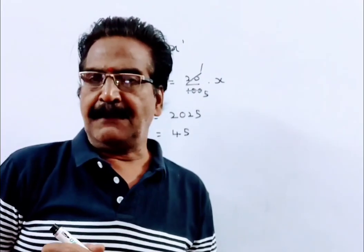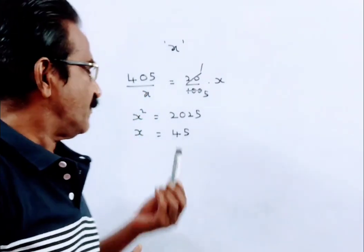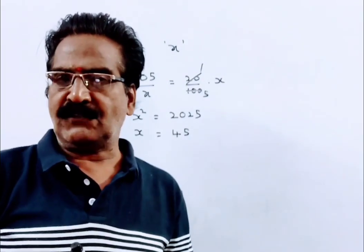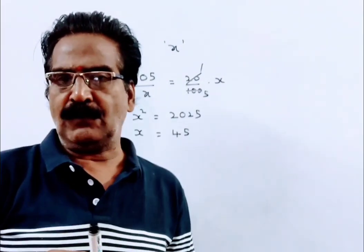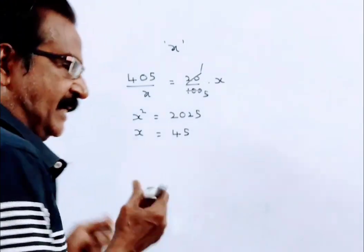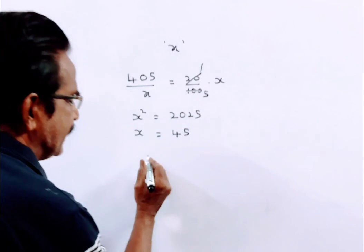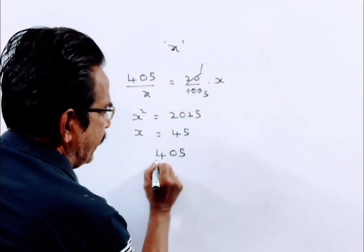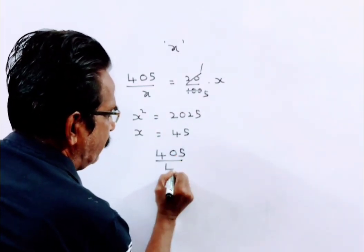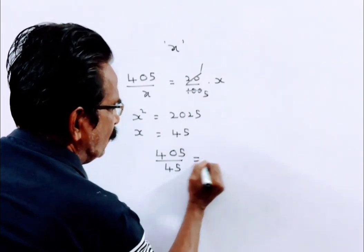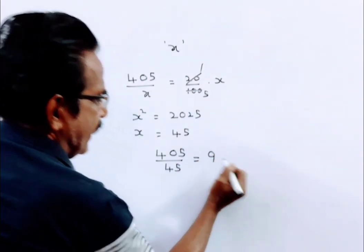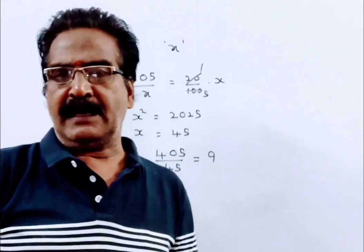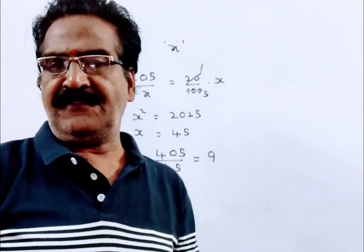Friends, the number of children is 45. Total number of sweets is 405. Then each child gets total sweets divided by total number of children, that is equal to 9. Each child receives 9 sweets.